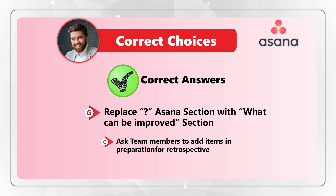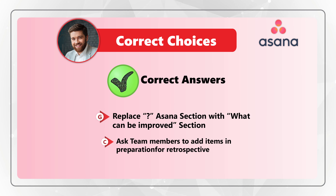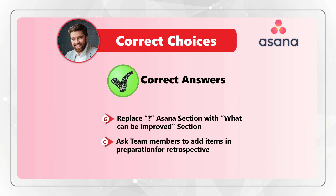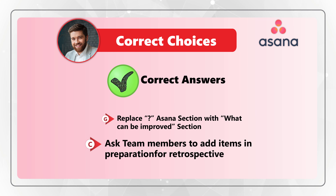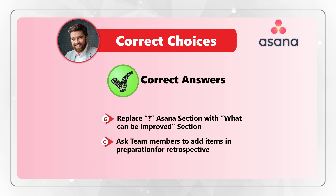This is why the correct answers are choices G and C: choice G — replace the question mark Asana section with 'what can be improved' section — and choice C — ask team members to add items in preparation for retrospective. Do you have a better way to solve it? Please make sure to post in the comments so we can all learn.